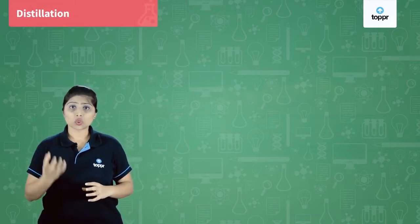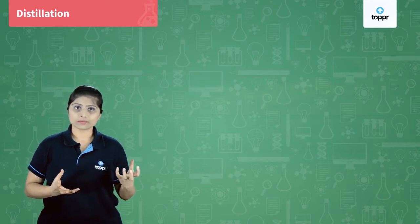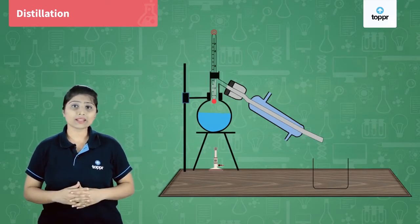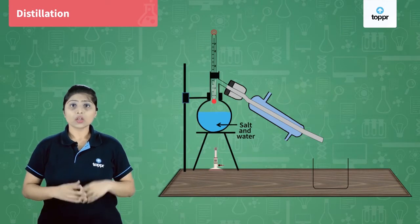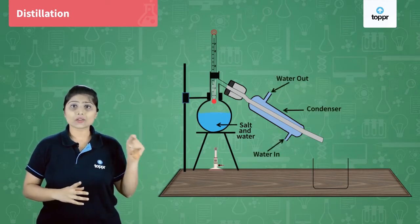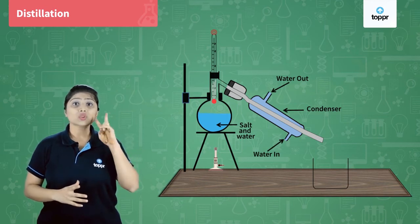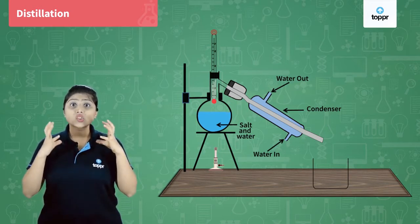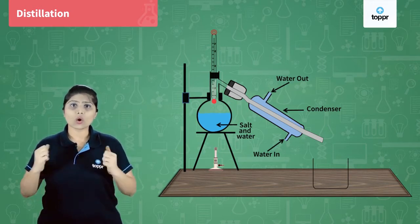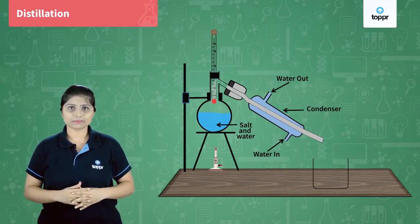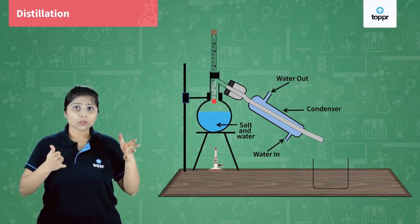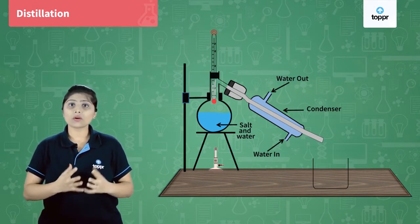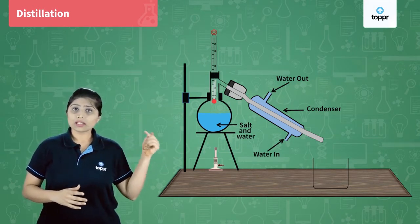In this process, we will obtain salt as well as the water. For that we have a distillation flask. In this flask, we take the mixture of salt and water. Through this flask, we have a condenser going. This condenser has two tubes — the inner tube and the outer tube. The outer tube has ice cold water in it, so it acts like a water jacket to the inner tube. Due to the ice cold water in the outer tube, the inner tube becomes extremely cold. This entire setup is called the condenser.